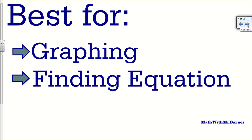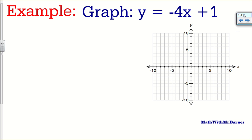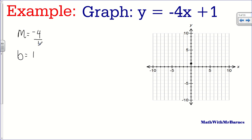Let's look at graphing Y equals MX plus B. The first thing we have to do is figure out our slope and Y-intercept. Slope is negative 4, and the Y-intercept is 1. The Y-intercept is a point on the Y-axis, so we can plot that point right there. Now, slope is a set of instructions. Even though my slope is negative 4, I like to consider it as negative 4 over 1, and remember that slope is rise over run — the up or down divided by the side to side.